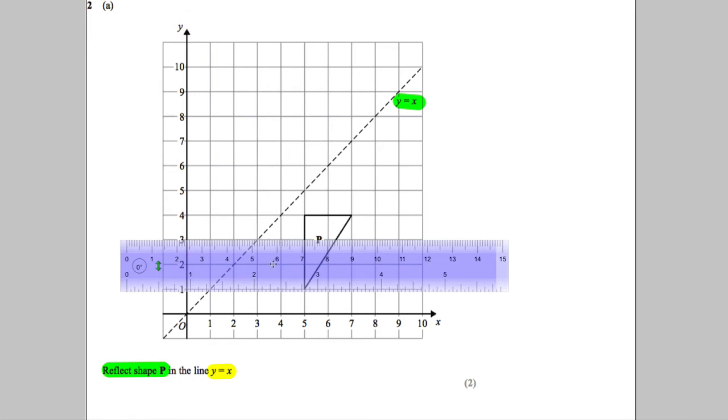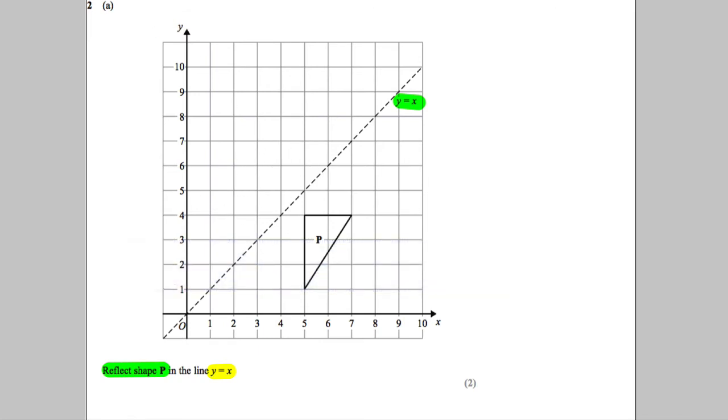Obviously in the exam you also have tracing paper. So what you could do is get your tracing paper out. So ask for a piece of tracing paper in the exam. Now the key thing here, you put that tracing paper, it must be in line with your line of reflection, like something like that. You put it spot on in line.